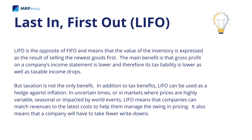Last In, First Out, or LIFO, is the opposite of FIFO and means that the value of the inventory is expressed as a result of selling the newest goods first. The main benefit is that gross profit on a company's income statement is lower, and therefore its tax liability is lower as taxable income drops. In addition to tax benefits, LIFO can be used as a hedge against inflation. In uncertain times or in markets where prices are highly variable, seasonal, or impacted by world events, LIFO means that companies can match revenues to the latest costs to help manage the swing in pricing. It also means that a company will have to take fewer write-downs.